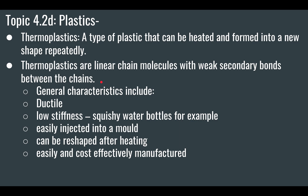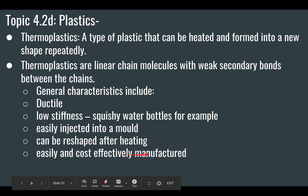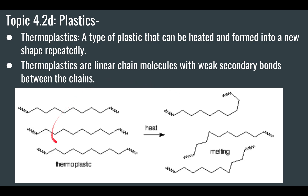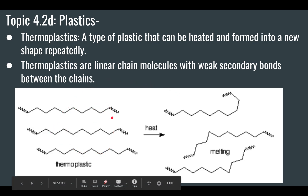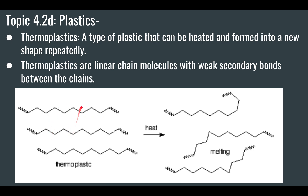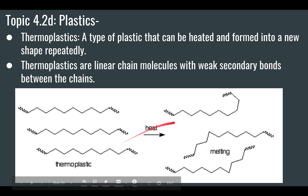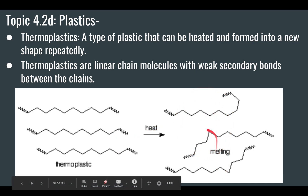Think of the polymer chains as almost like a mat of hair — parallel strands. General characteristics include being ductile, meaning they can be pulled into a wire or extruded, and having low stiffness — like a squishy water bottle. They can be injected into a mold, reshaped after heating, and are easy and cost-effective to manufacture. Because there are no bonds between the polymer chains, it's easier to melt and reform them.